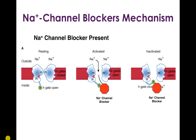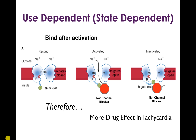Sodium channel blockers only bind to the sodium channel when it is in either the activated or the inactivated conformation. This is important because the channel can only reach these conformations after being activated — at rest it's never in those states. Every time the channel opens it goes through activated, then inactivated, then resting. This means sodium channel blockers have more drug effect in tachycardia, because the faster the heart rate, the more often channels are activated and blockers have opportunities to bind — a nice property for a drug treating tachycardia.